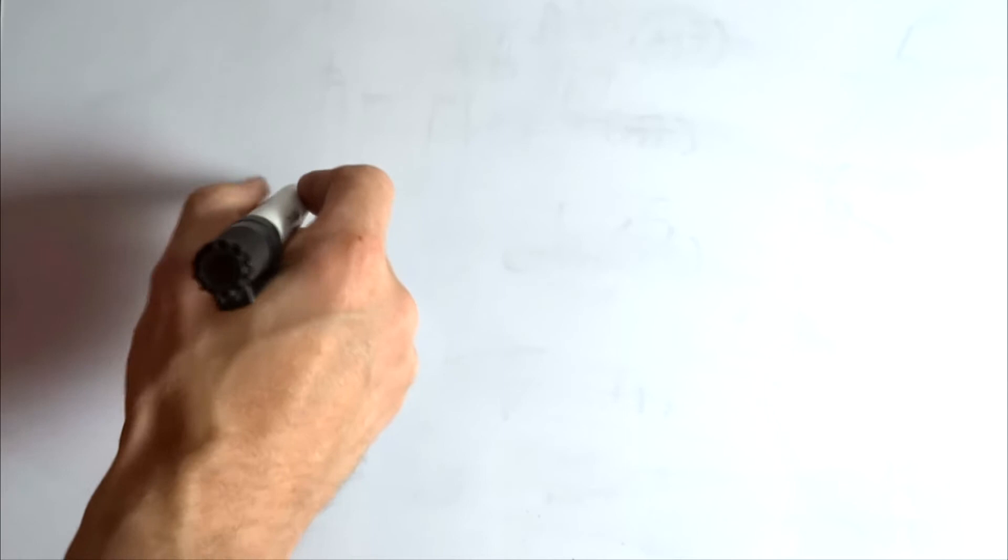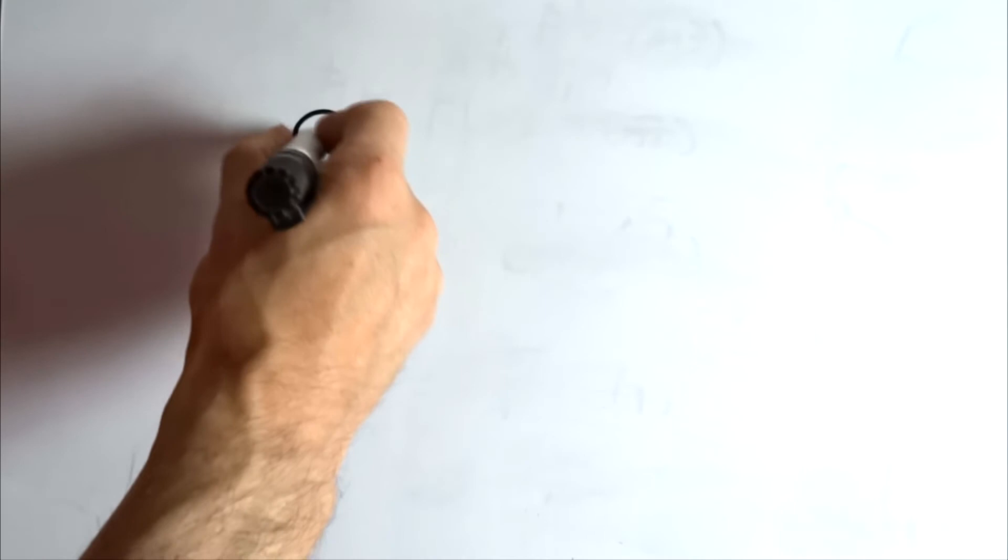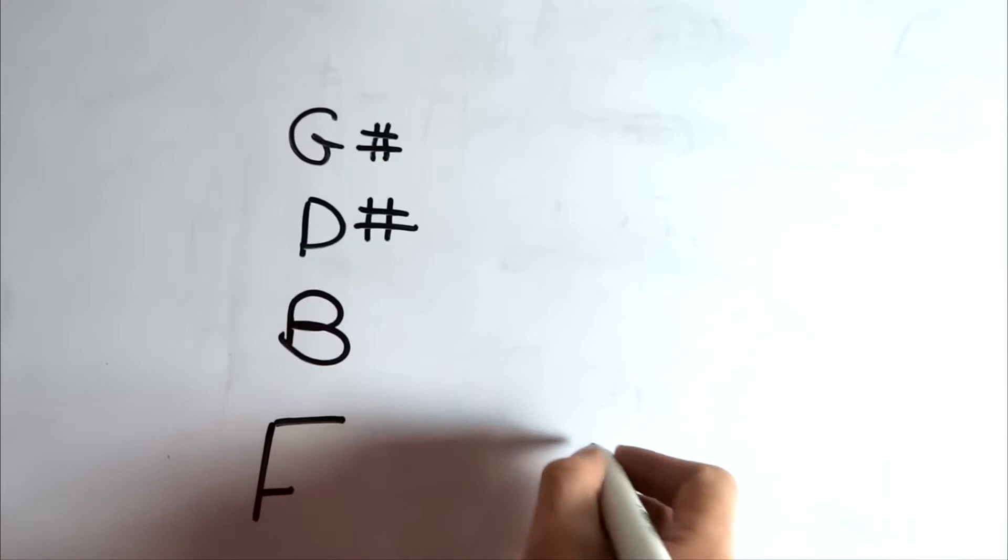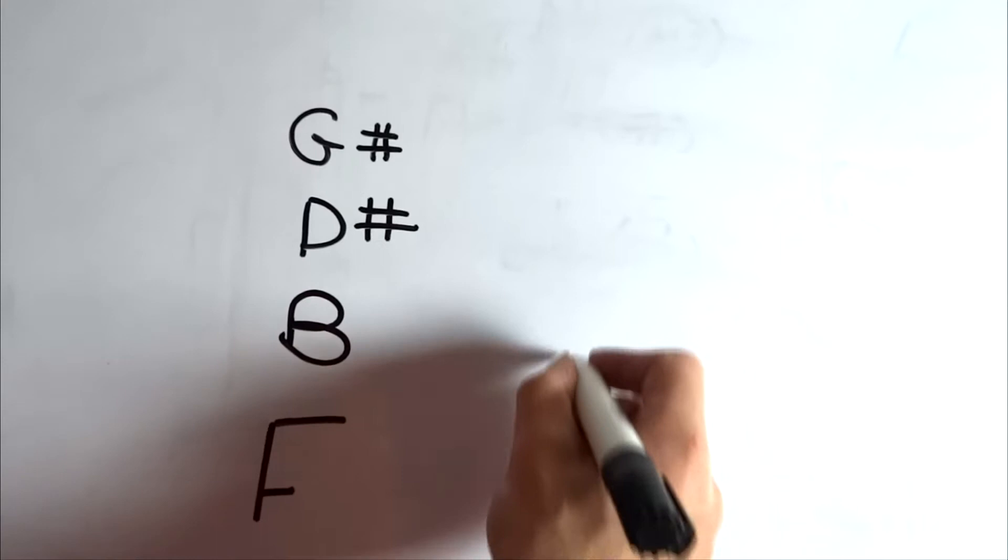So the problem is that when Wagner wrote his Tristan Chord, he wrote it like this: F, B, D Sharp, and G Sharp. Now if this really was an F half diminished chord, or an F minus 7 flat 5 chord, we would write it F, C flat, E flat, A flat.